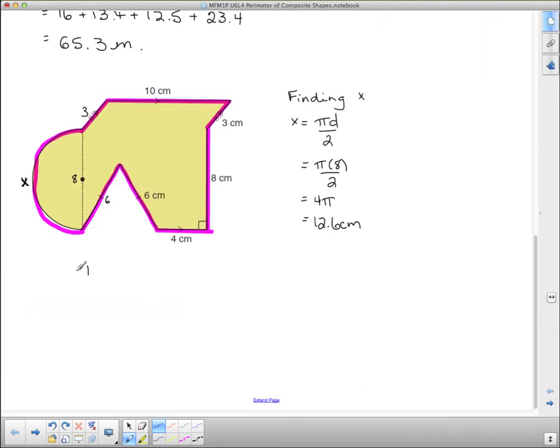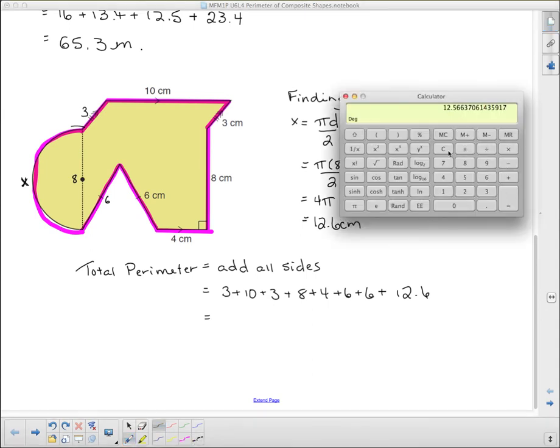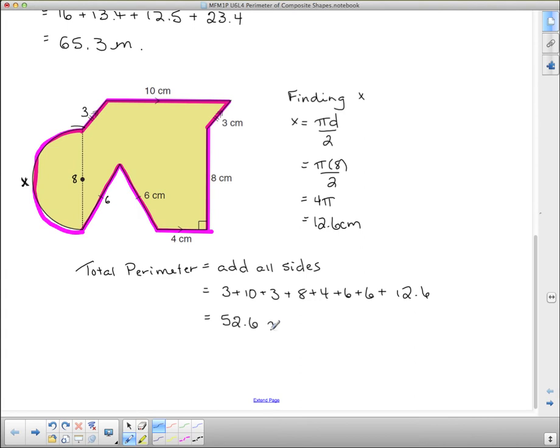Now I just have to add them all up. So I say total perimeter equals, and we're just going to say add all sides. And what have we got here? Let's start from the end of this loop so that we make sure we get them all. So 3 plus 10 plus 3 plus 8 plus 4 plus 6 plus 6 plus my curved part that I found out was 12.6. Now I'm just going to add these up. I get a 10, I get two 3's so I'm just going to add a 6, I got an 8 and a 4 is 12, I get another 12 with the 6 and the 6, and then I get 12.6 equals 52.6. And that is in centimeters.